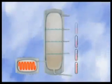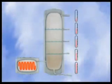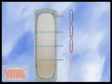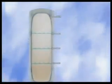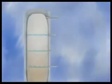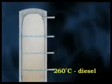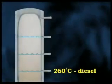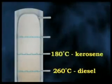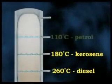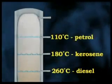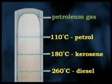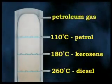The higher the gas rises in the tower, the lower the temperature becomes. The precise details differ at every refinery and depend on the type of crude oil being distilled. But at around 260 degrees, diesel condenses out of the gas. At around 180 degrees, kerosene condenses out. Petrol or gasoline condenses out at around 110 degrees, while petroleum gas is drawn off at the top.